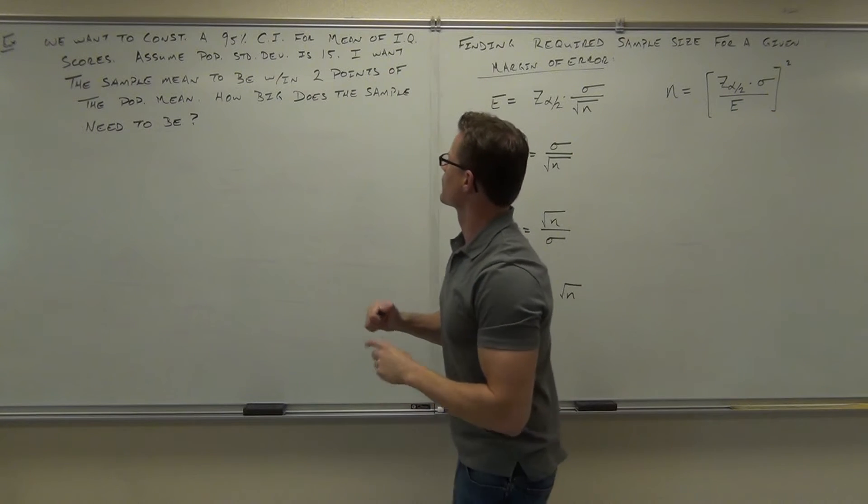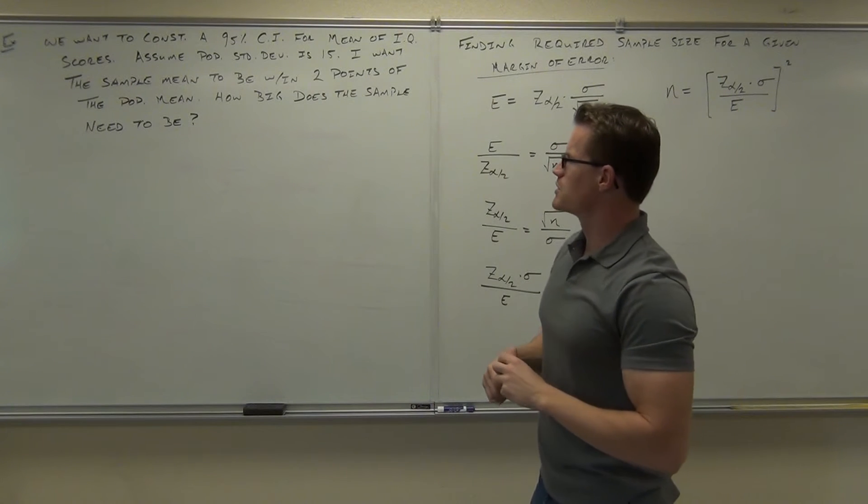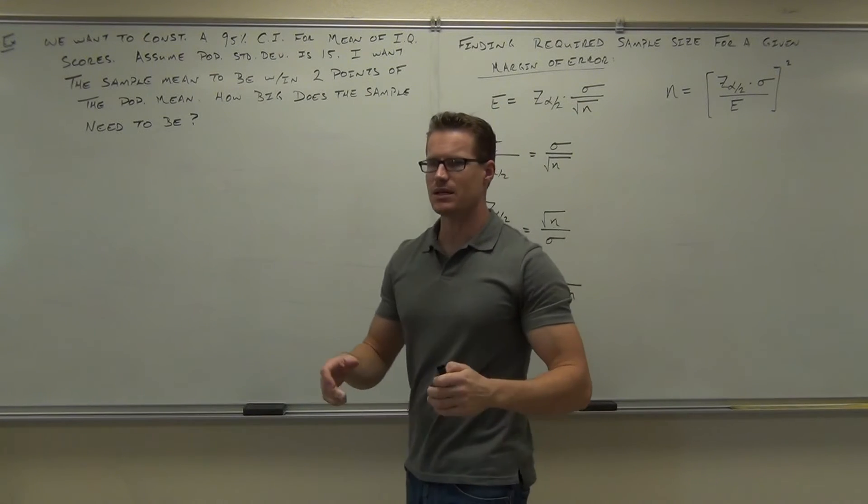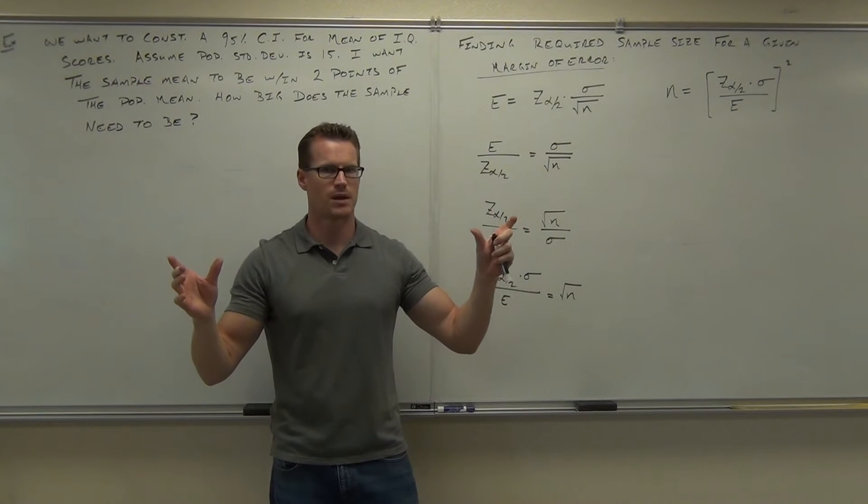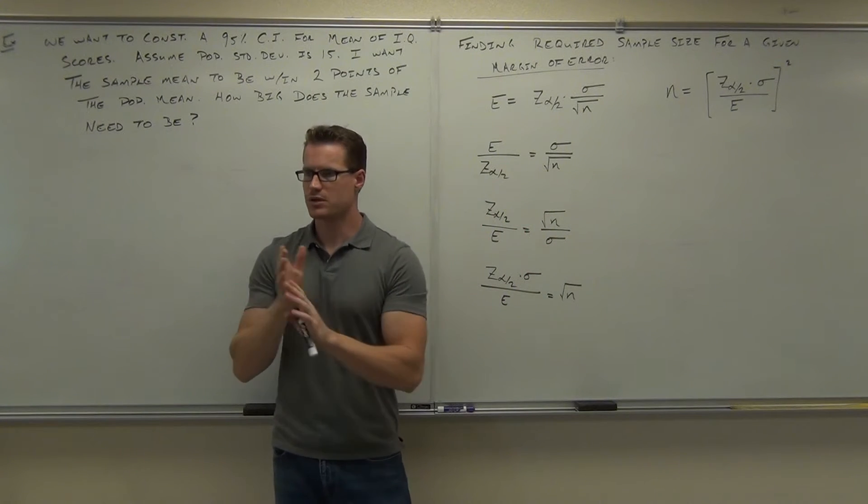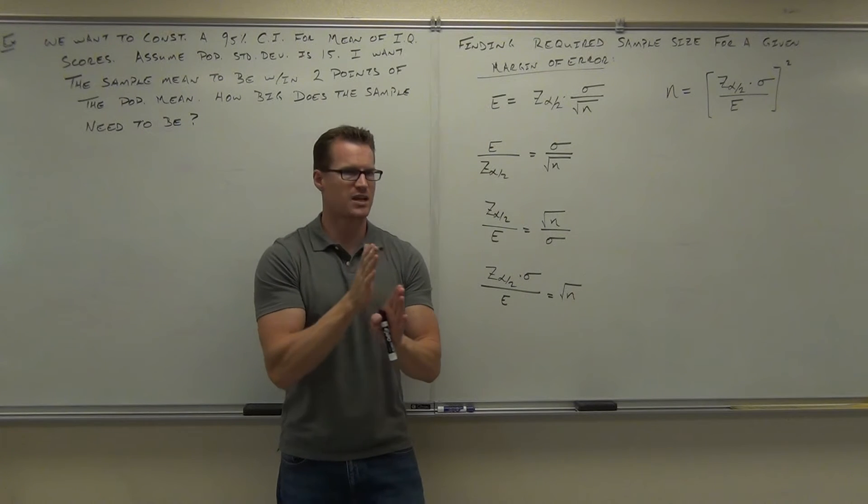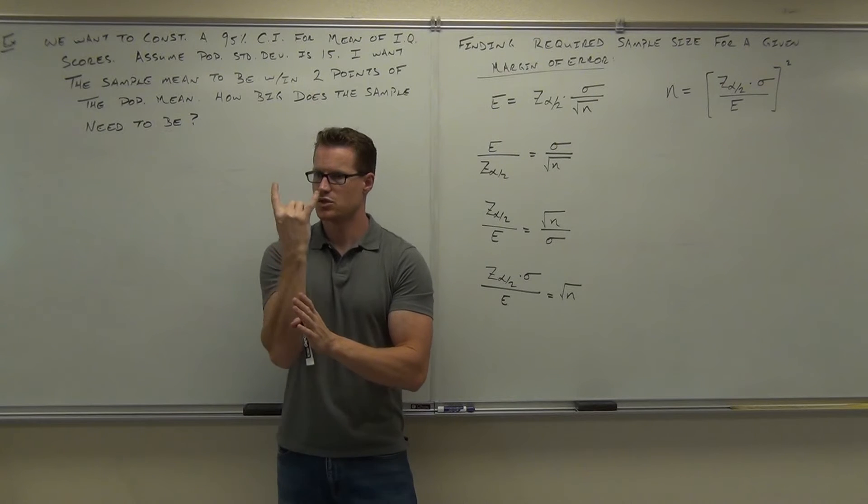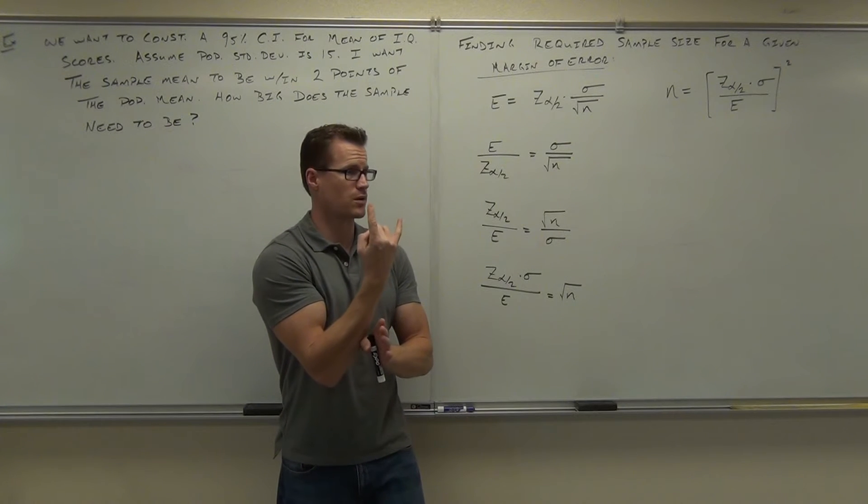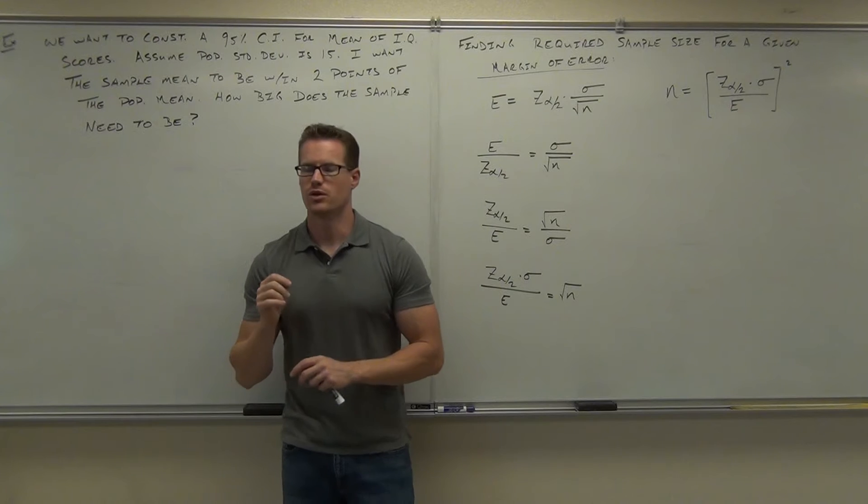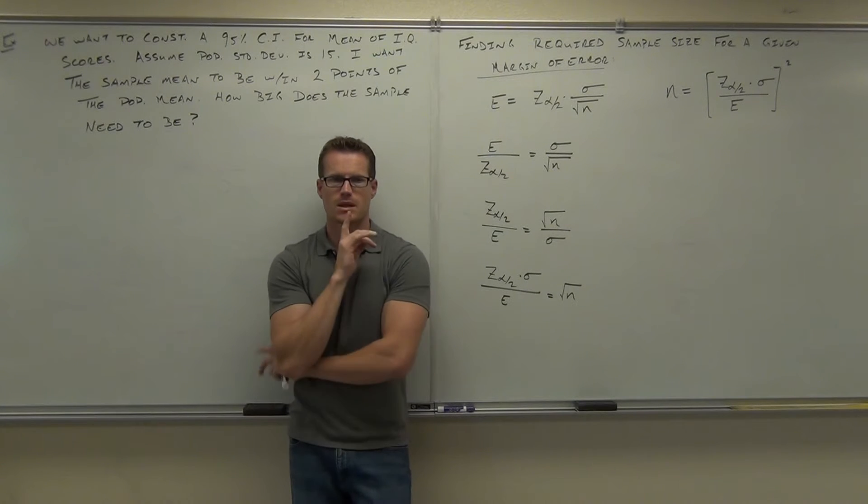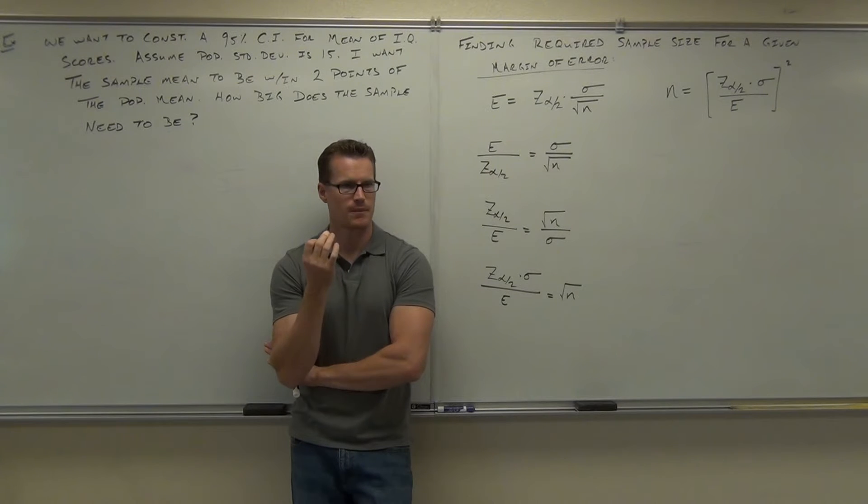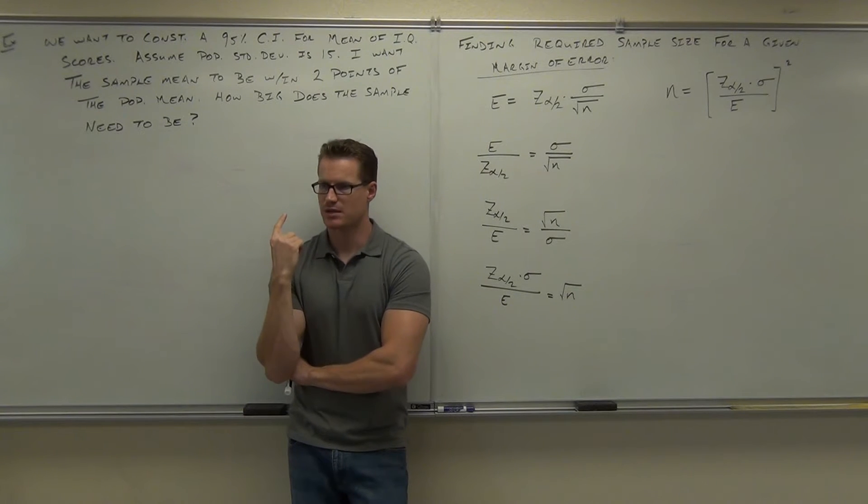Also, we need our e. Now, it says a little bit further, I want the sample mean to be within two points of the population. What's that mean? I have the sample mean. I want it to be within two points of the population mean. Within two points means the maximum difference between them has to be what? Two. It has to be two. So what's my margin of error? Two. Now, the question. Is it two? Is it 0.2? Or is it 0.02? Are we dealing with proportions?